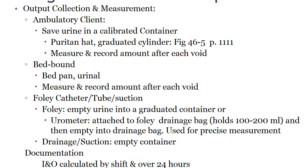For output collection, save urine in a calibrated container such as a hat or graduated cylinder. Measure and record the amount after each void; if the patient is bed-bound, measure from the bedpan and urinal after each void. If a Foley catheter is inserted, empty urine into a graduated container or use the urometer on the side of the catheter bag for precise measurements. Intake and output is calculated by shift and over 24 hours; always report end-of-shift I&Os. Each client must have their own graduated cylinder — do not share.